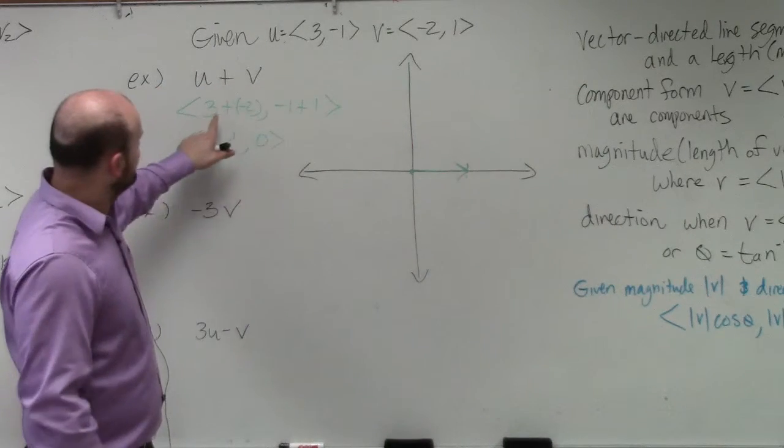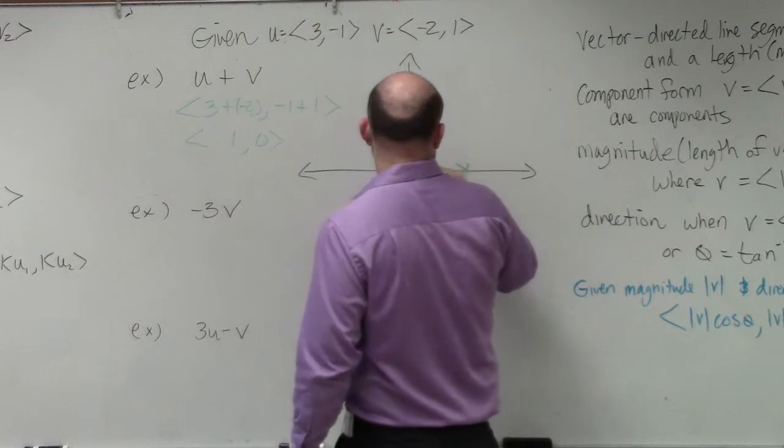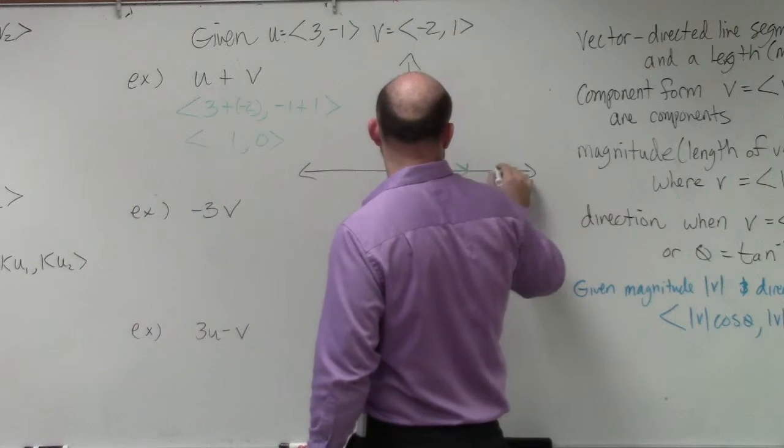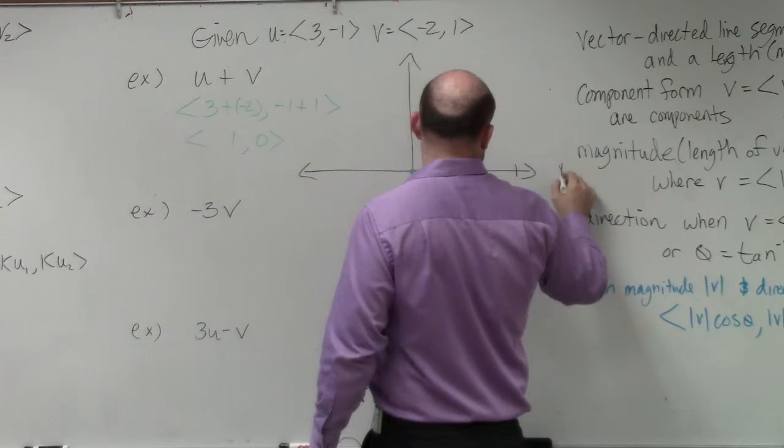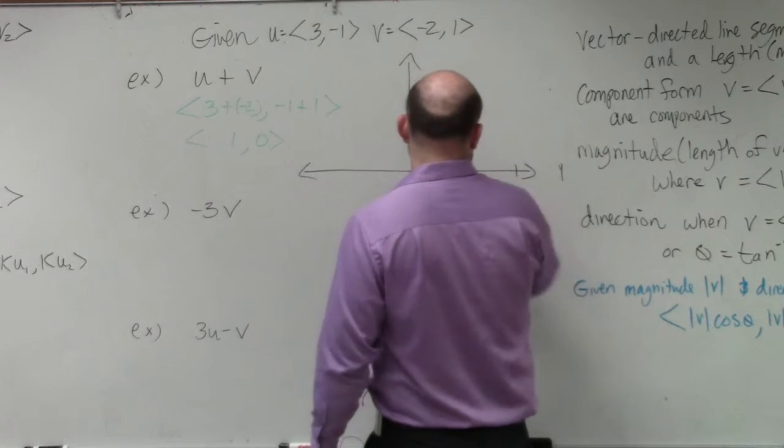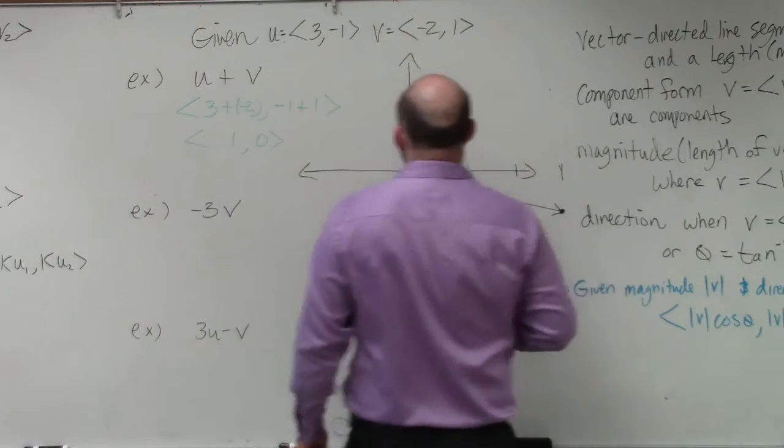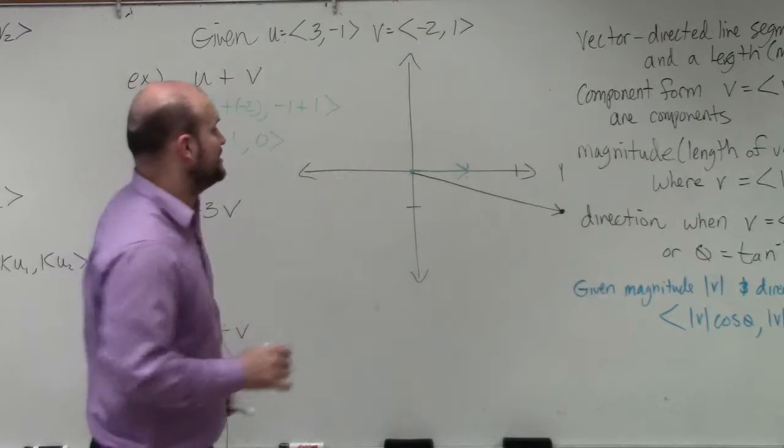So what we could do is we could graph the vector u, which is 3 comma negative 1. And then you could graph v, which is negative 2, 1.